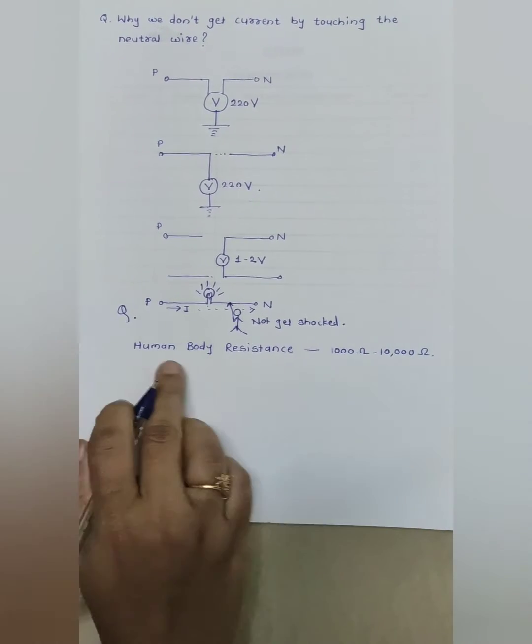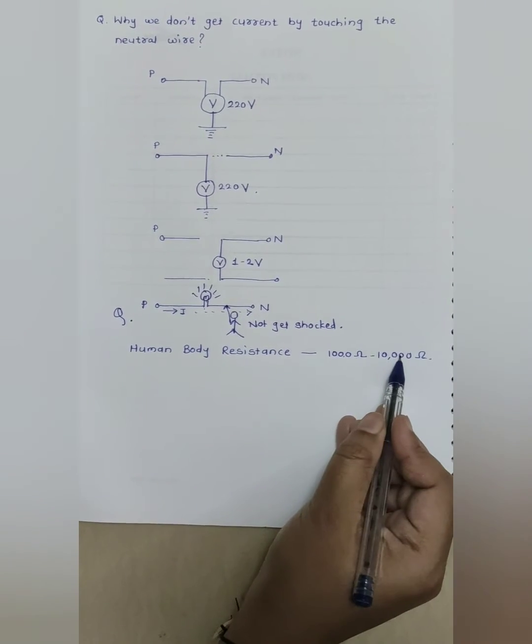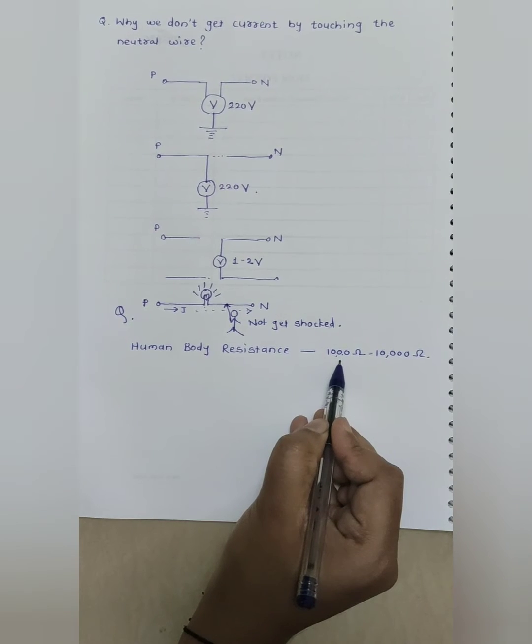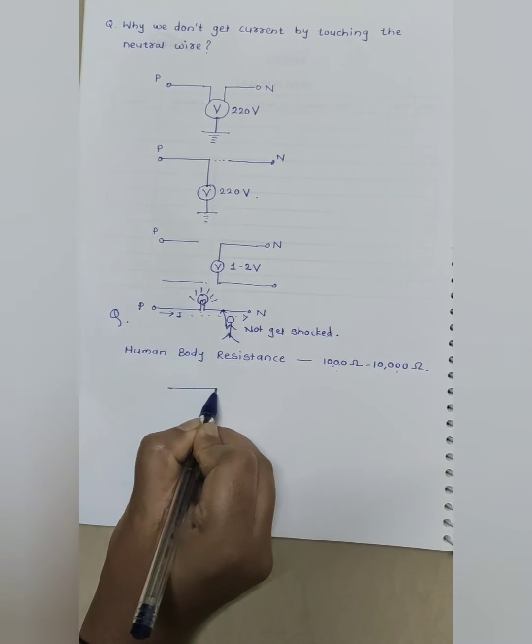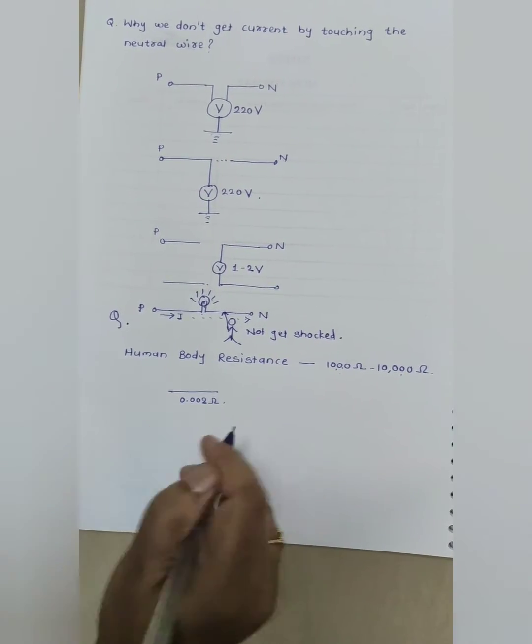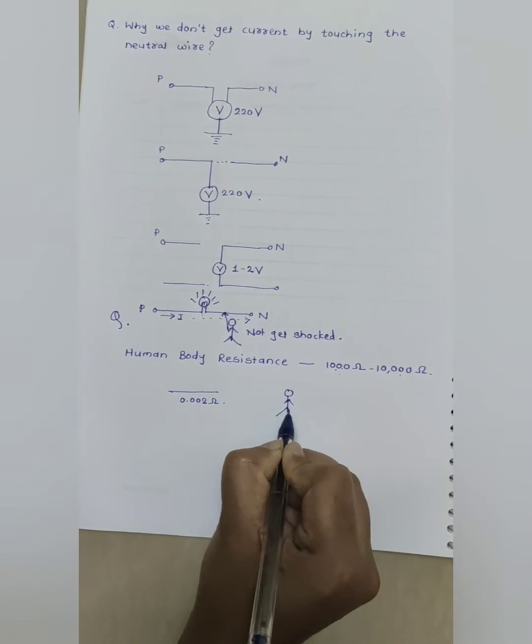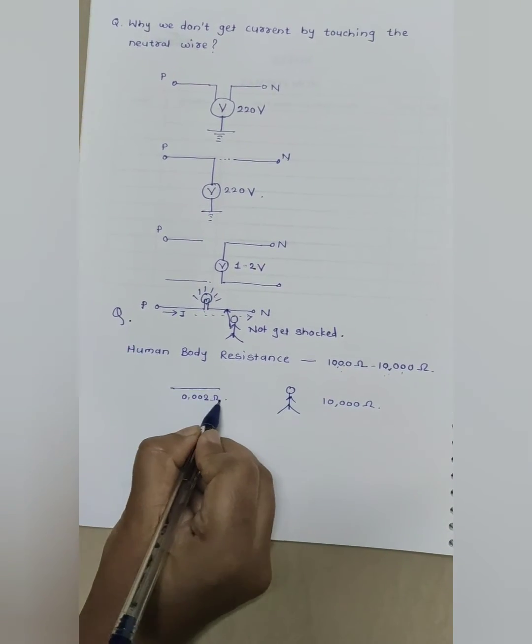If human body is wet, then resistance is low, about 1000 ohm. And under the dry condition, the resistance of human body is 10,000 ohm. Suppose here is a wire. Wire's resistance is very very low, about 0.002 ohm. But human body resistance is very high, that is 10,000 ohm compared to that wire.